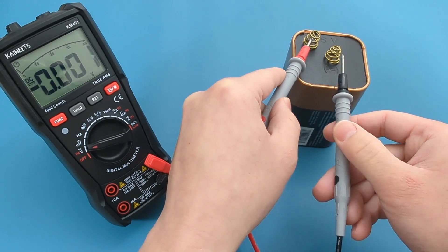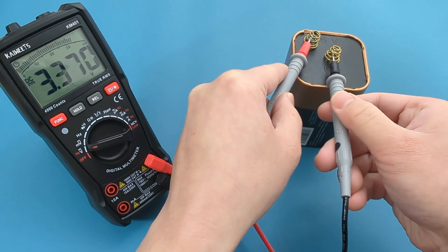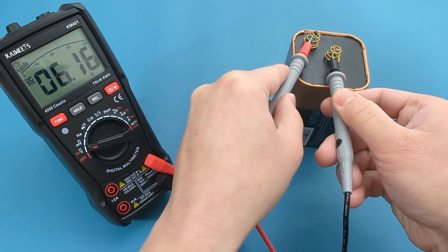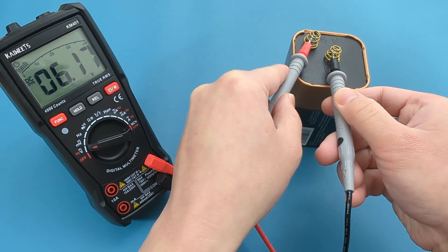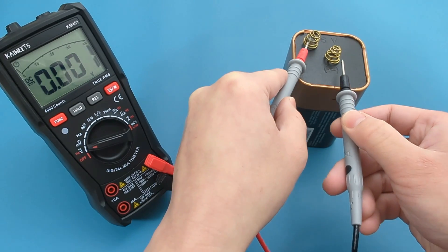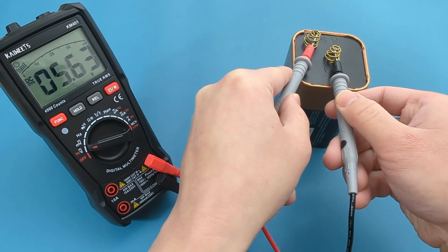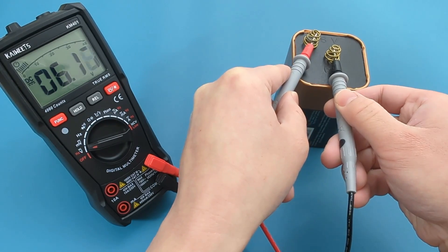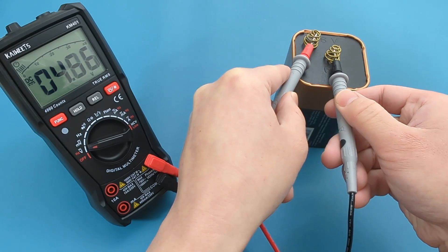Touch the red probe lead on the battery's positive terminal and the black probe lead on the negative terminal. The reading shows 6.1 volts. This is a good battery.